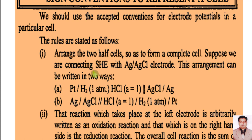We can arrange and represent this cell in two ways. In the first way: Pt | H₂(1 atm) | HCl(a=1) ‖ AgCl | Ag. Here, A means activity — the concentration of HCl solution is 1 molar. These two half cells are connected through a salt bridge. Alternatively, the cell can be represented as: Ag | AgCl ‖ HCl(a=1) | H₂(1 atm) | Pt.